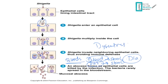Another mechanism in Shigella is the Shiga toxin — not all Shigella strains carry it, but those that do are more virulent. The toxin causes capillary thrombosis and inflammation of the colonic mucosa, eventually leading to hemorrhagic colitis with bloody diarrhea.